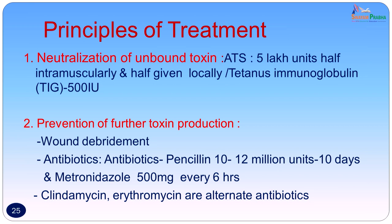Prevention of further toxin production is the next priority. This is done by adequate wound debridement — if the wound becomes aerobic the bacteria will not multiply and fresh toxin will not be produced. Along with wound debridement, antibiotics can be given — penicillin and metronidazole, both of which have action on Clostridium tetani; resistance has not so far been reported, so antibiotic sensitivity testing is not required. The moment tetanus is suspected, it is important to ensure antibiotics are started well in time.